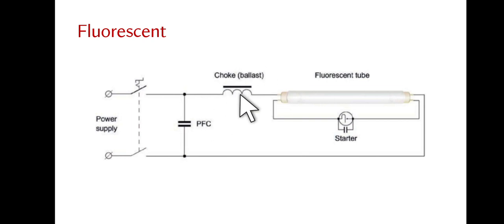The ballast, also known as the choke, regulates the current in the circuit, preventing a short circuit across the lamp when temperature rises. Fluorescent lighting has a longer lifespan and is more energy-efficient than incandescent lighting. However, they are more expensive, are difficult to implement a dimming function, and require more complex circuitry.